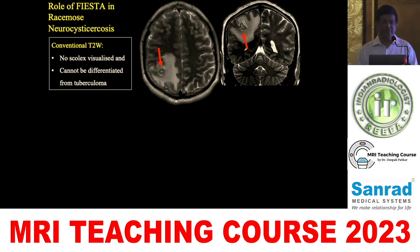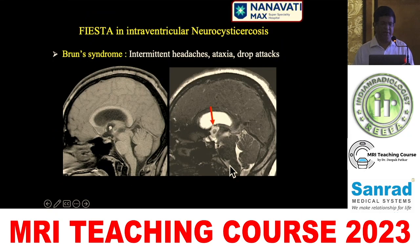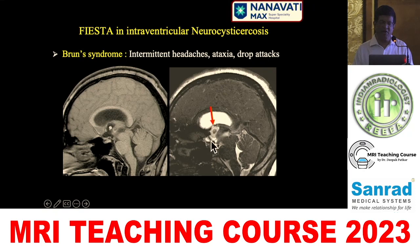FIESTA is the sequence used when you have cysticercus cysts in subarachnoid spaces. It is very useful when you don't see the scolex on routine T2 images — sub-millimeter FIESTA allows you to see the scolex, capsule, and daughter cysts clearly. When cysts are in the subarachnoid or intraventricular space, particularly the third ventricle, you get Bruns syndrome: intermittent headaches, ataxia, and drop attacks.